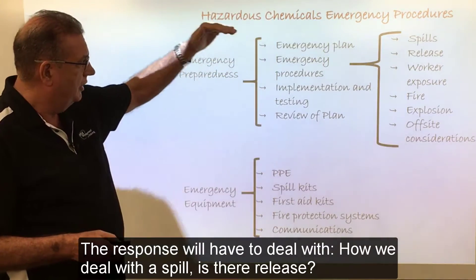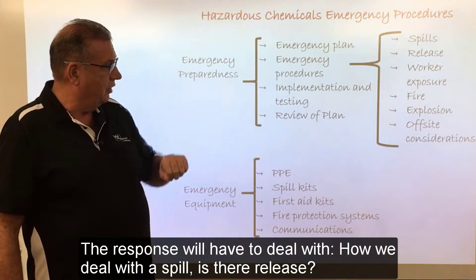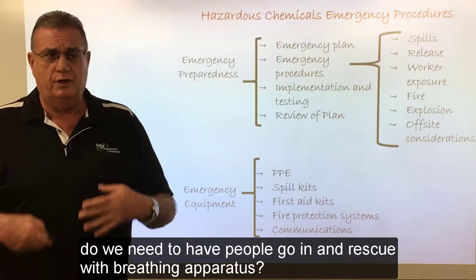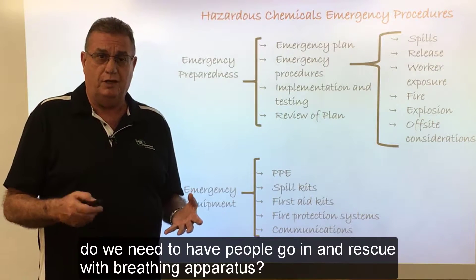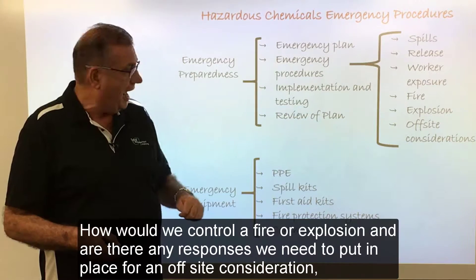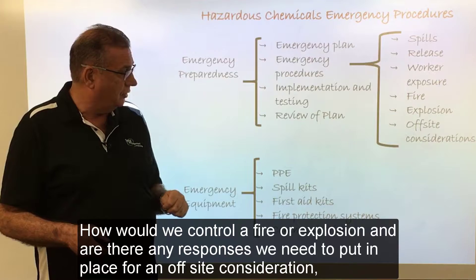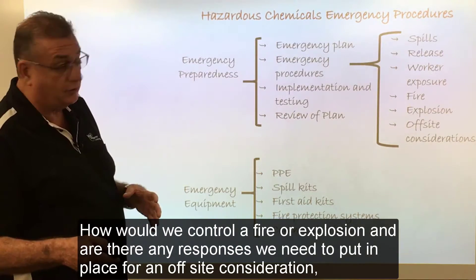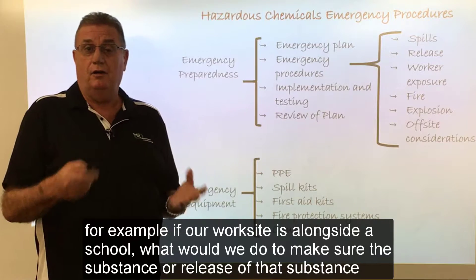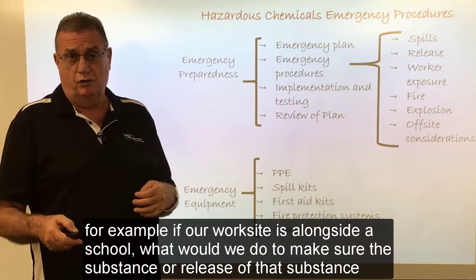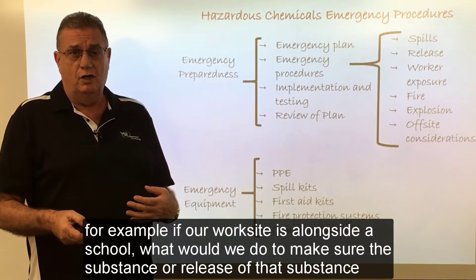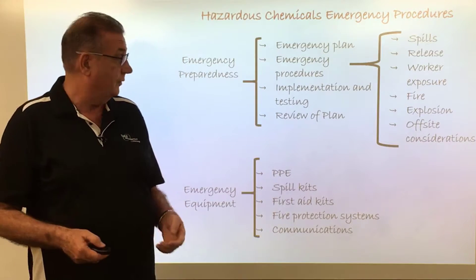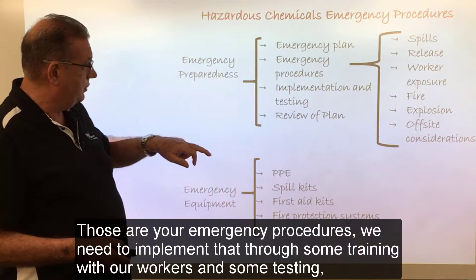The response will have to deal with how we manage a spill. Is there a release? What if a worker was exposed to it — how would we respond? Do we need to have people going in to rescue with breathing apparatus? How we would control a fire or explosion? And are there any responses we need to put in place for an offsite consideration? For example, if our work site is alongside a school, what will we do to make sure that a release of that substance is not going to impact on the school?